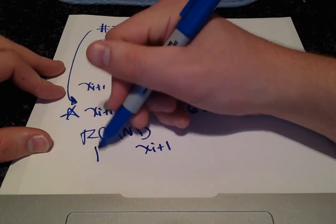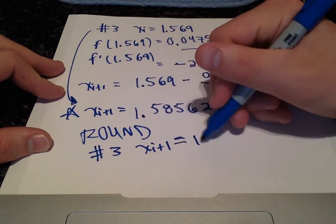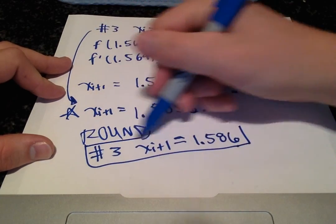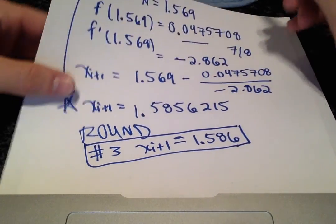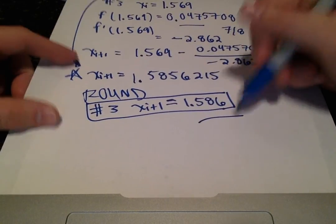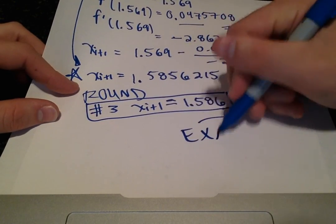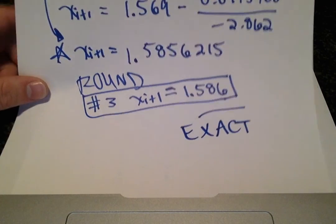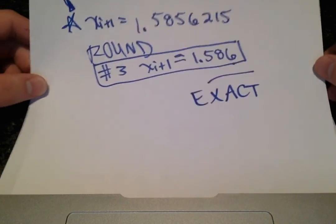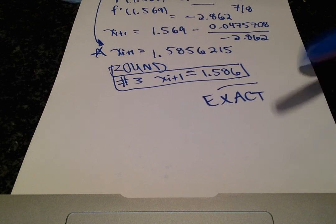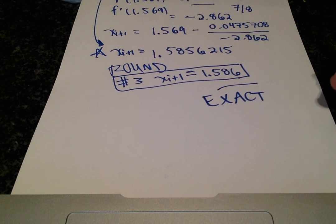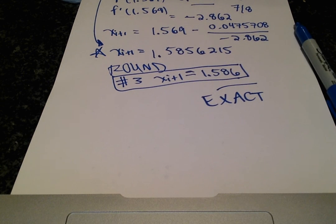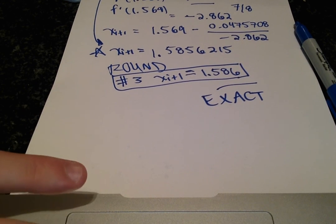So rounding we get x sub i plus 1 for the third iteration is 1.586. Oh boy would you look at that, with just three iterations and using three decimal places we got the exact value of the root approximated with three decimal places. And if that's not impressive to you then I feel pretty sad because I think that's pretty impressive that this Newton-Raphson method can accomplish that with just three iterations. So thanks for watching once again, I hope this helped you understand Newton-Raphson method.